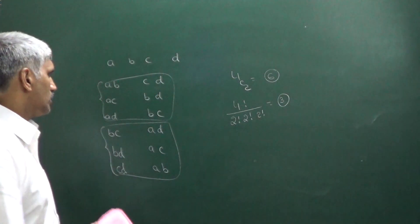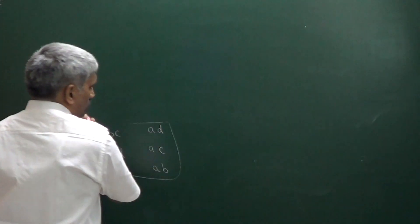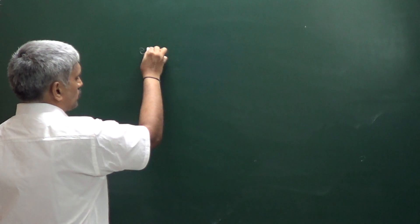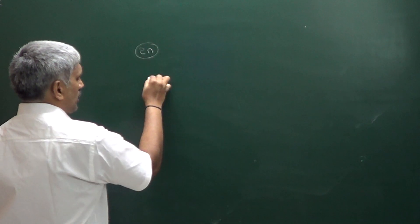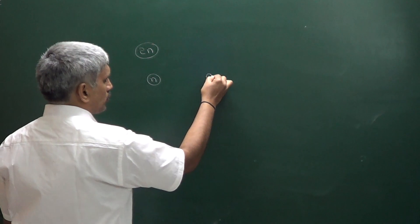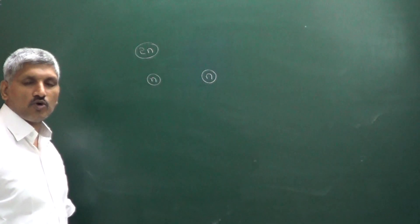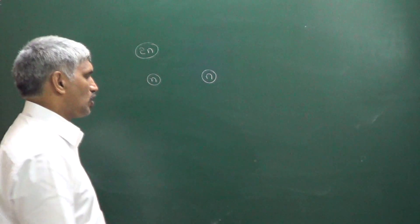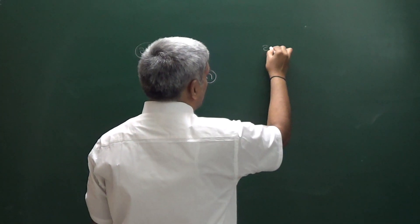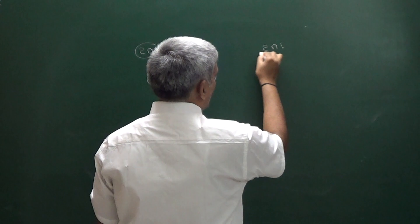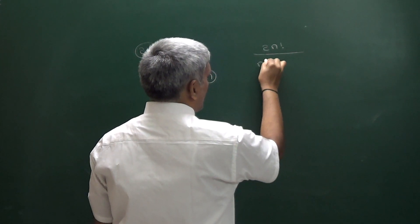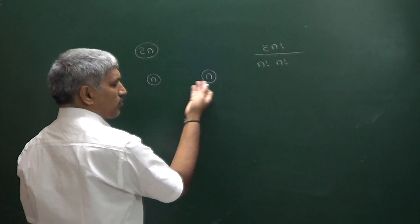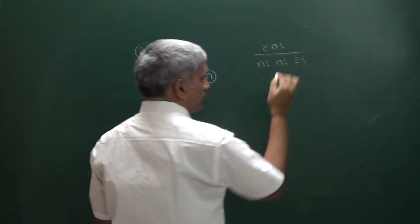Now the general question: suppose total 2N items are there. These 2N items we have to divide into 2 equal groups — one group containing N items, the other group containing N items — in how many different ways? That can be written as 2N factorial divided by N factorial into N factorial, and because of 2 equal groups, we divide by 2 factorial.